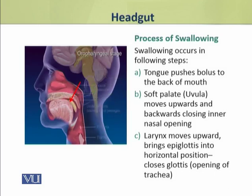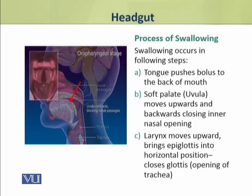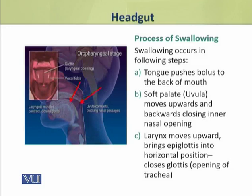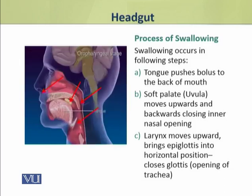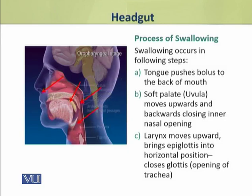The tongue gently pushes the bolus toward the back of the mouth. Then the soft palate, or uvula, moves upward and backwards, which closes the nasal opening. After that, the larynx moves upward and brings the epiglottis to a horizontal position. This process closes the glottis, which is the opening of the trachea.